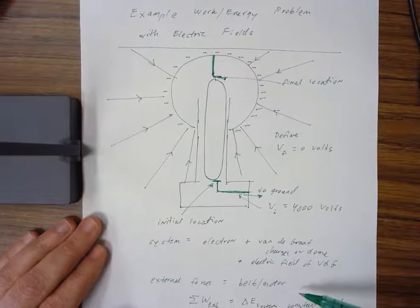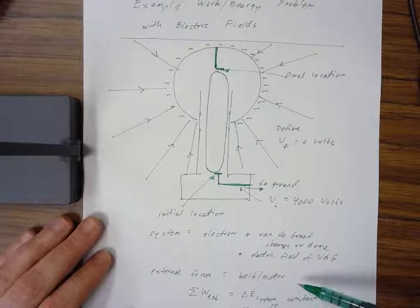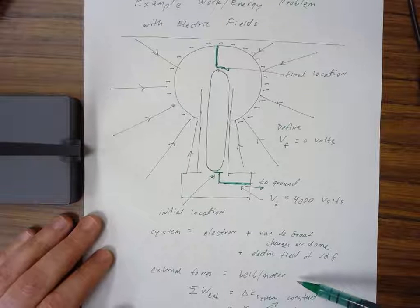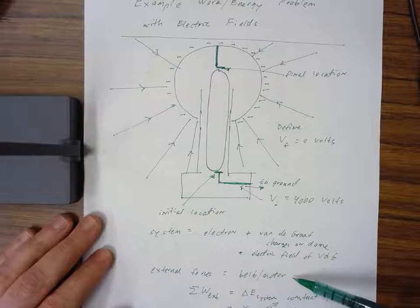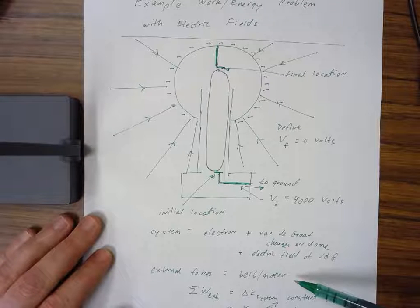We also need to note what's outside the system that's going to do work. In this case, that's the belt and motor. I did not include those in my system because I want to know how much work those external forces are going to do.